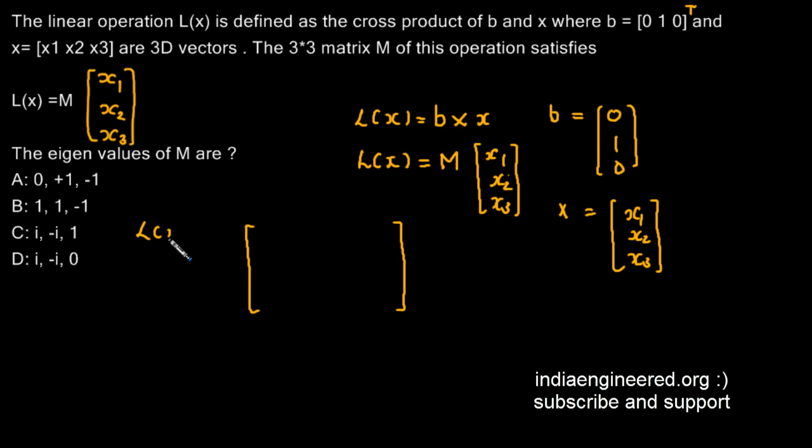Let's say L(x), which is b cross x. That is [i cap, j cap, k cap] in the first row, then we have the terms of b, that is [0, 1, 0], then x, that is [x1, x2, x3]. Now we can expand it.